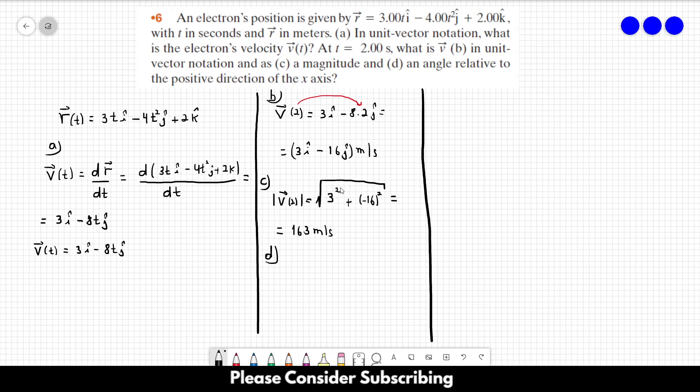We want also to obtain an angle relative to the positive direction of the x-axis. The angle is the inverse function of tangent. So it's tangent to the minus 1 or arctangent of the y component over the x component. So it would be arctangent of minus 16 over 3. And this gives us two different angles: minus 79.4 degrees and 101 degrees.